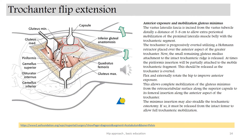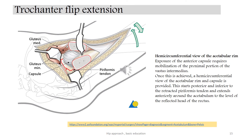As you notice, the piriformis, gemellus superior, obturator internus, and gemellus inferior keep their attachment, and the quadratus femoris also keeps its attachment to the bone. Between the gluteus medius and piriformis, and under the gluteus medius, there is the gluteus minimus. You can see the trochanteric osteotomy plane. Notice the placement of the four-point retractors and notice that the posterior wall of the acetabulum is now visible.